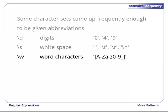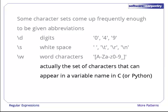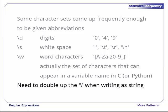And backslash W matches word characters. It's equivalent to the set shown on the right of uppercase letters, lowercase letters, digits, and the underscore. This might seem a funny definition of word. It's actually the set of characters that can appear in a variable name in a programming language like C or Python. And again, in order to write one of these regular expressions as a string in Python, you have to double up the backslashes.